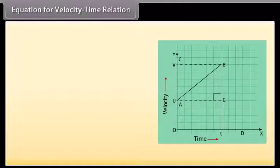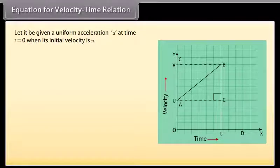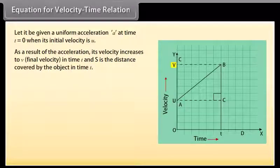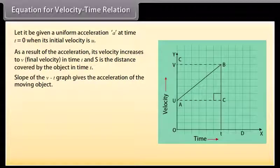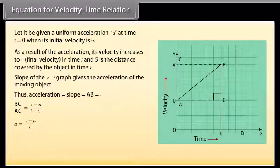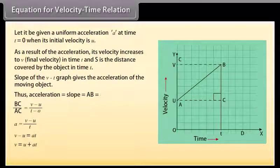Equation for velocity-time relation. Consider an object moving with a uniform velocity U in a straight line. Let it be given a uniform acceleration A at time T = 0, when its initial velocity is U. As a result of the acceleration, its velocity increases to V (final velocity) in time T, and S is the distance covered. The slope of the velocity-time graph gives acceleration: A = AB/AC = (V − U) / (T − 0), so A = (V − U) / T. Therefore V − U = AT, giving V = U + AT, which is the first equation of motion.